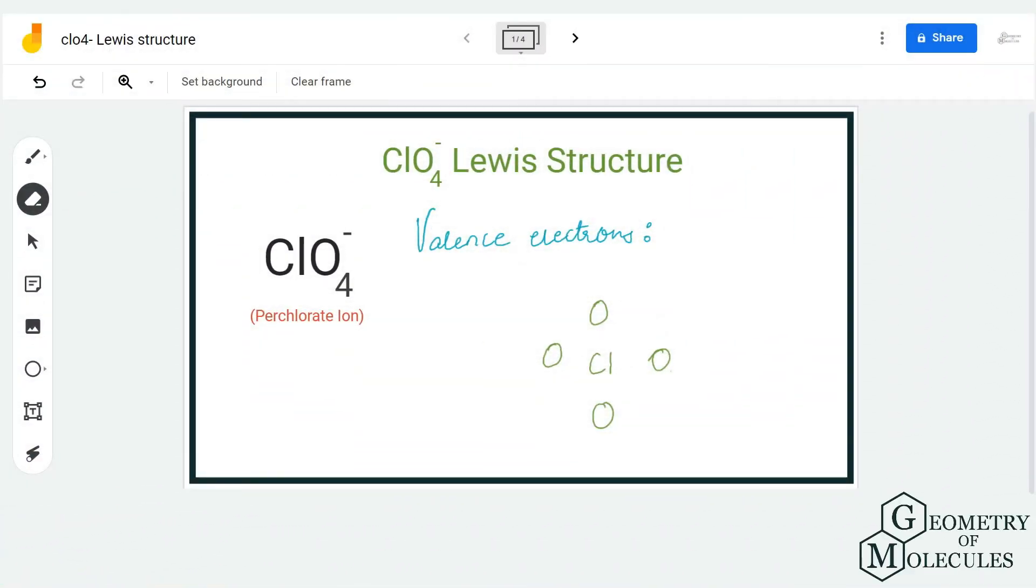Hi guys, welcome back to our channel. In today's video, we are going to look at the Lewis structure for perchlorate ion. It comprises one chlorine atom and four oxygen atoms.